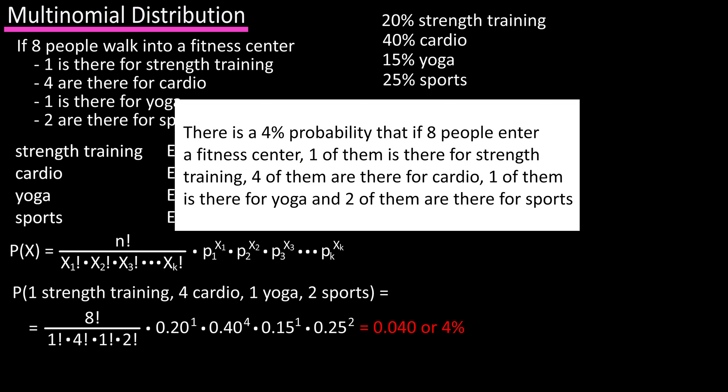So to sum this up, there is a 4% probability that if eight people walk into a fitness center, one of them is there for strength training, four of them are there for cardio, one of them is there for yoga, and two of them are there to play a sport. I highly recommend you write out all the notations and put in all the values for them — a lot of times that can make things a lot clearer.